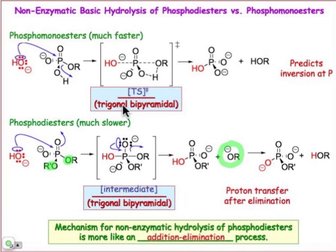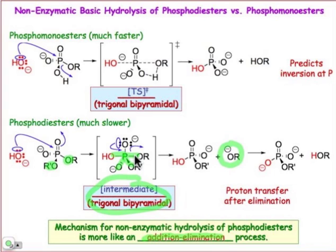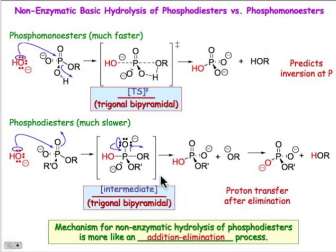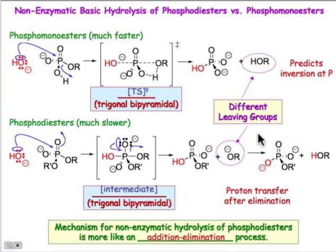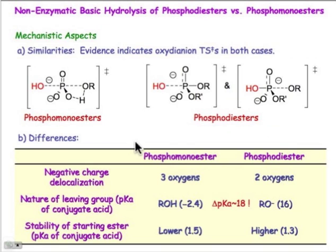This SN2-like pathway is no longer available. Instead, the pathway follows an addition-elimination process, much like what we've encountered for typical carbonyl chemistry. There is a trigonal bipyramidal intermediate — a fully formed intermediate where all bonds are fully formed — unlike the transition state structure where bonds are being formed and broken. In the case of the phosphomonoester, there isn't any intermediate at all. So the key difference, to summarize, is the nature of the leaving group.